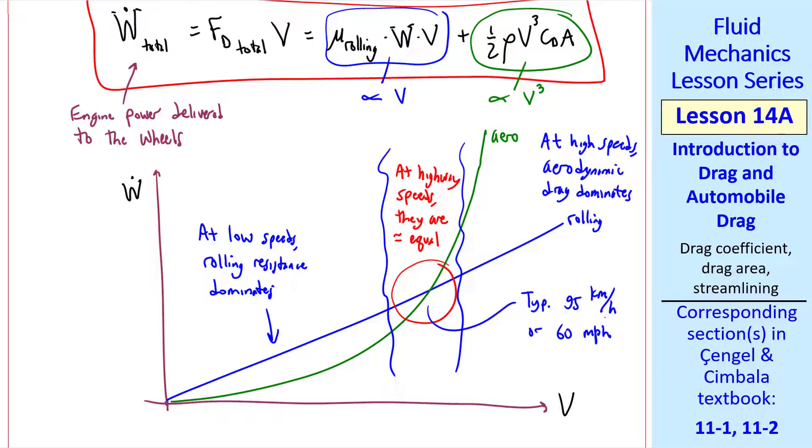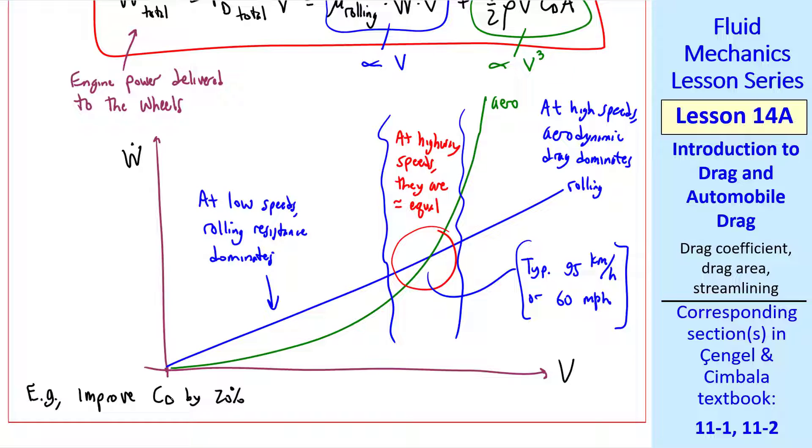The two curves typically cross at highway speeds, where rolling resistance and aerodynamic resistance are equal. I realize that some of you have a different idea of what highway speed is, but we're typically talking about 95 kilometers per hour, which is about 60 miles per hour, where these two curves cross. We can do a quick analysis. If we improve our drag coefficient by 20%, the improvement in your fuel economy is only about half of this, or 10%, at highway speed.